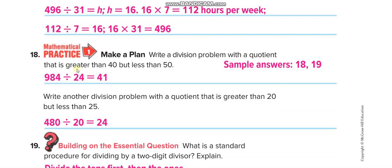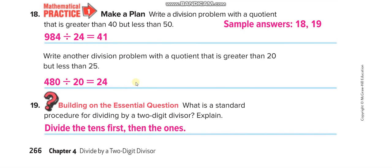Write a division problem with a quotient greater than 40 but less than 50 — here is one example, but you can write others. Give me another example in the comment box. Also write a division problem with a quotient greater than 20 but less than 25 — here it is, and you can give your examples in the comment box too. The standard procedure for dividing by a two-digit divisor is: divide the tens first, then the ones.